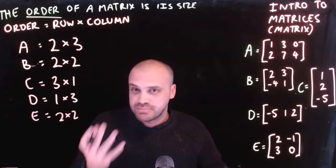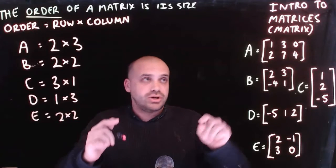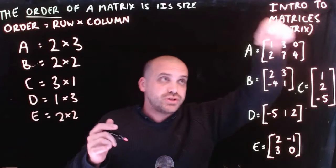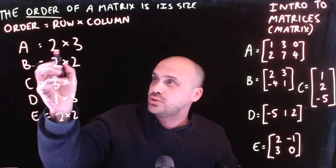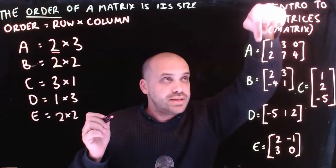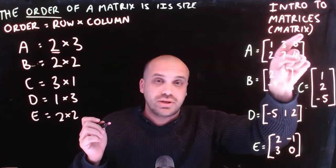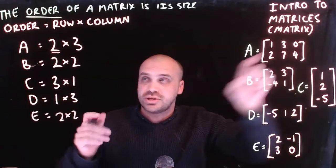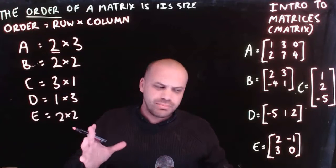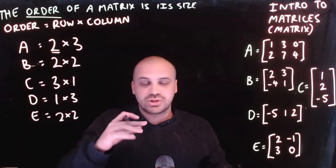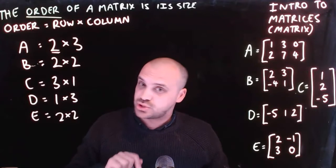The mistake students make here is doing this in the wrong order — they'll count across first and then down. But you have to make sure that the first number is how many rows, how many down, and then you count across. This is really, really important. Later on when you start doing matrix multiplication, this becomes so important.